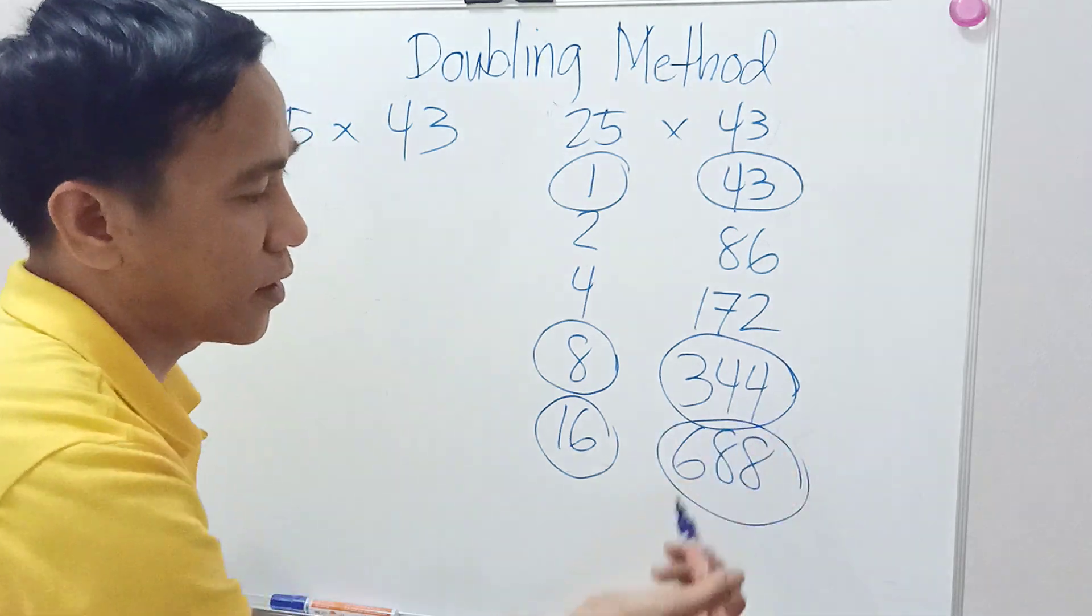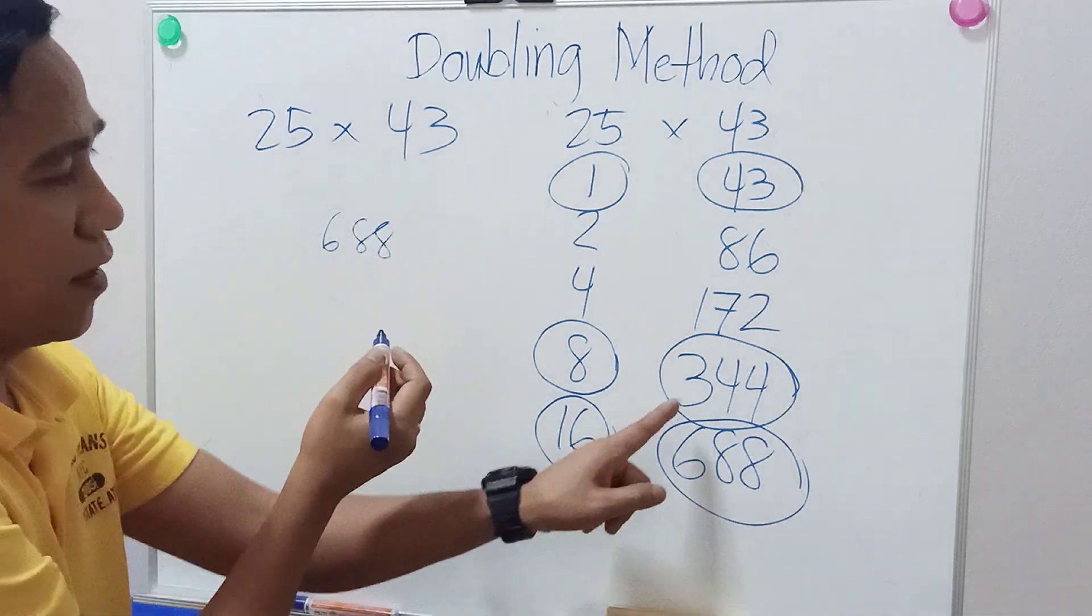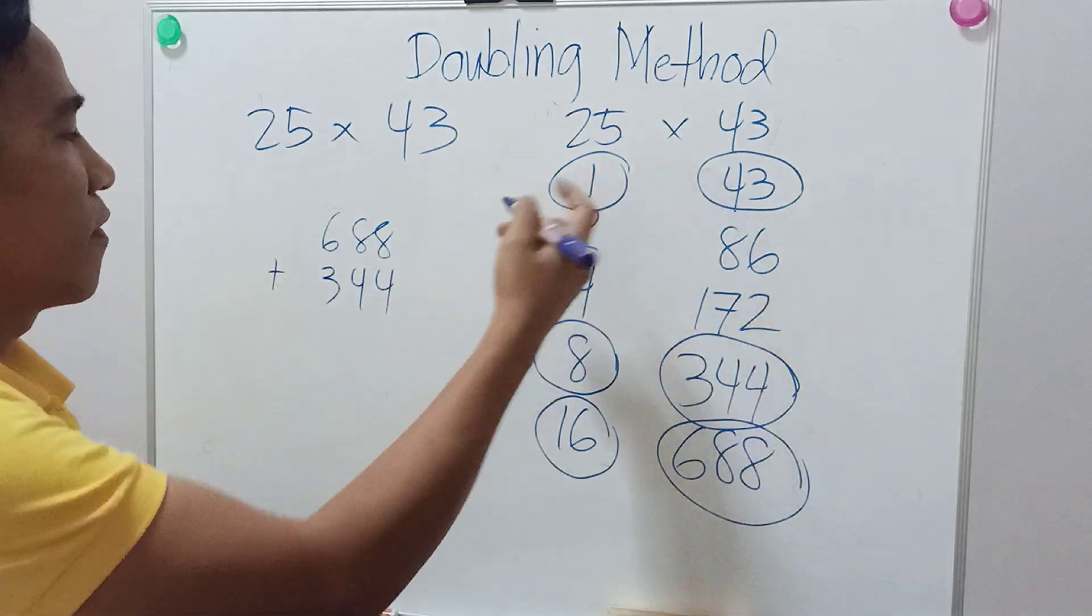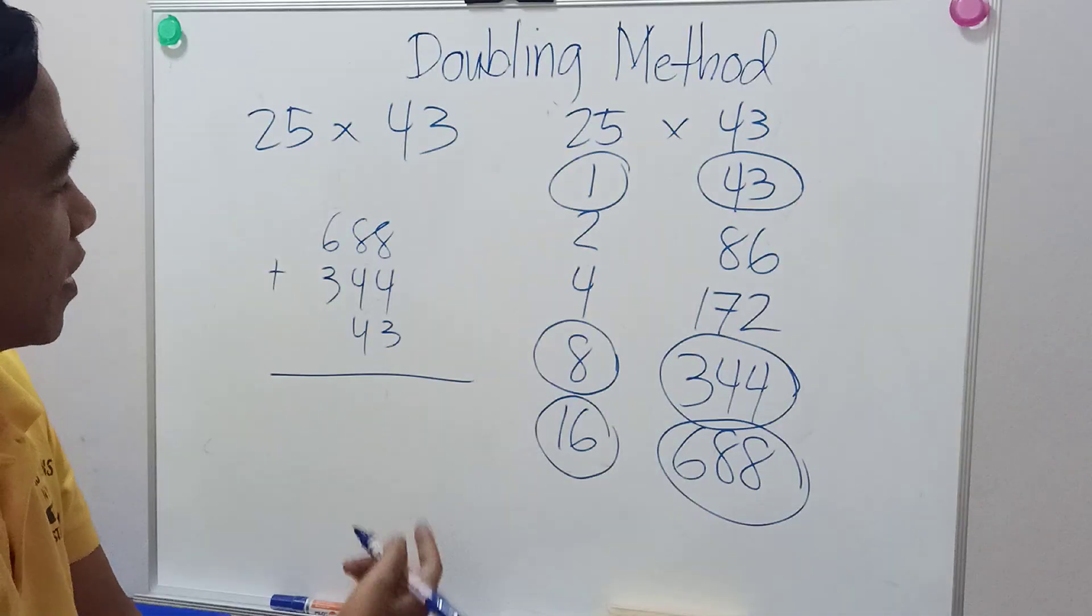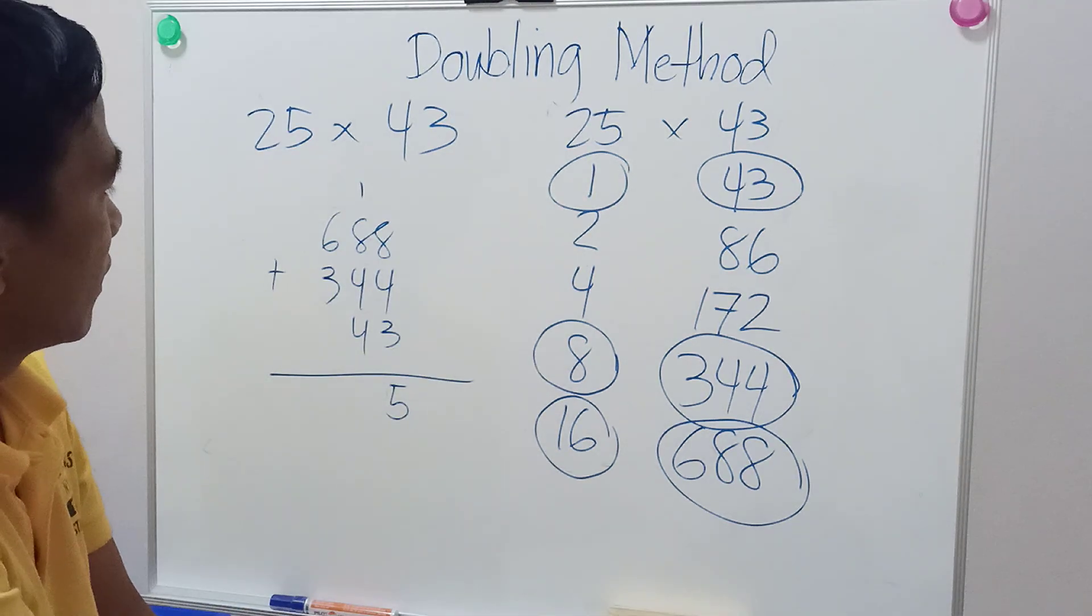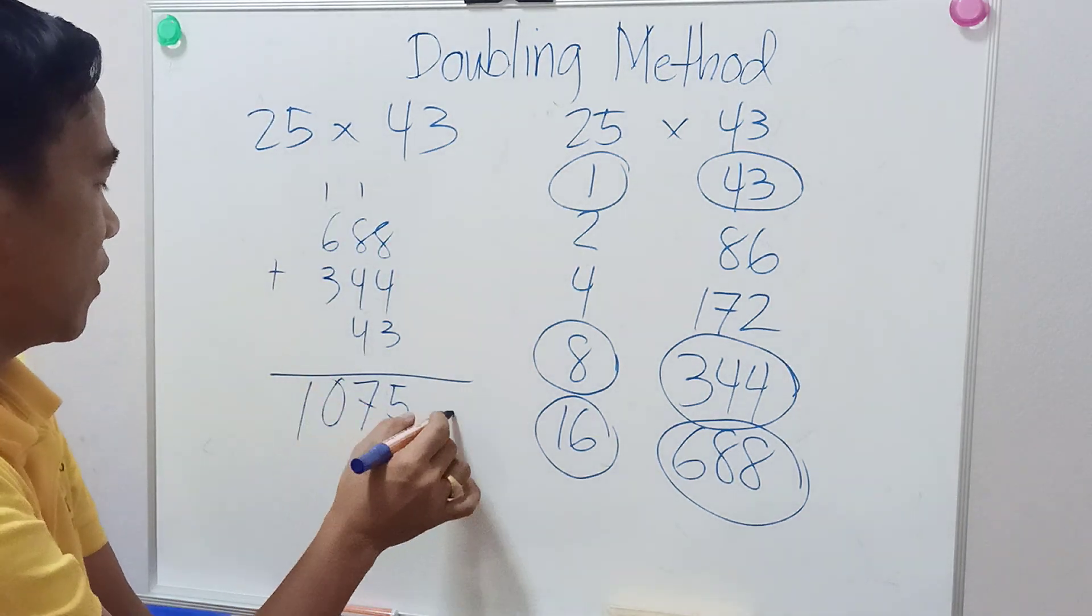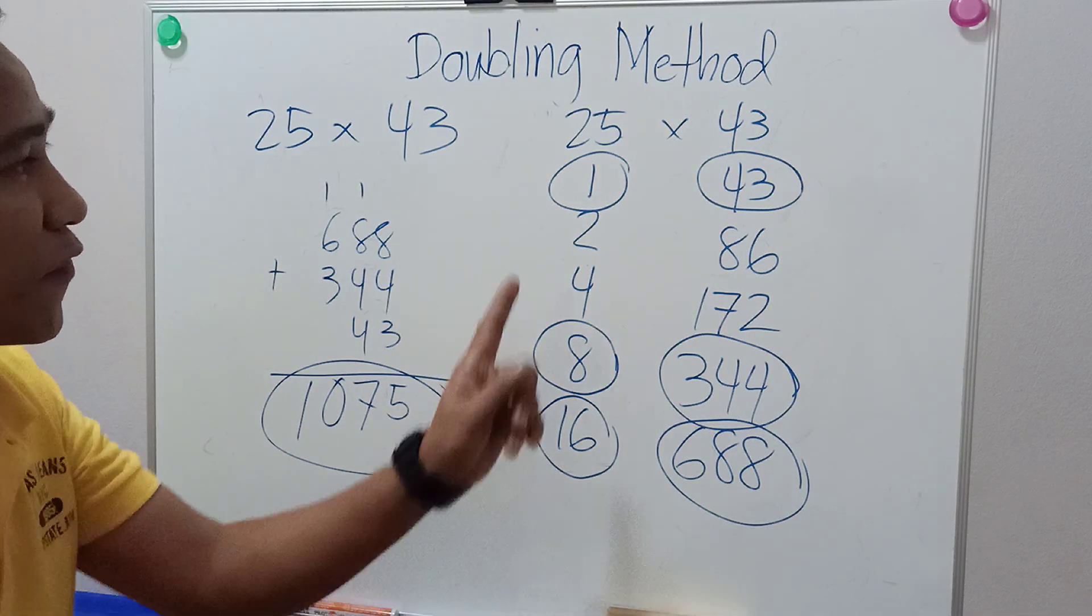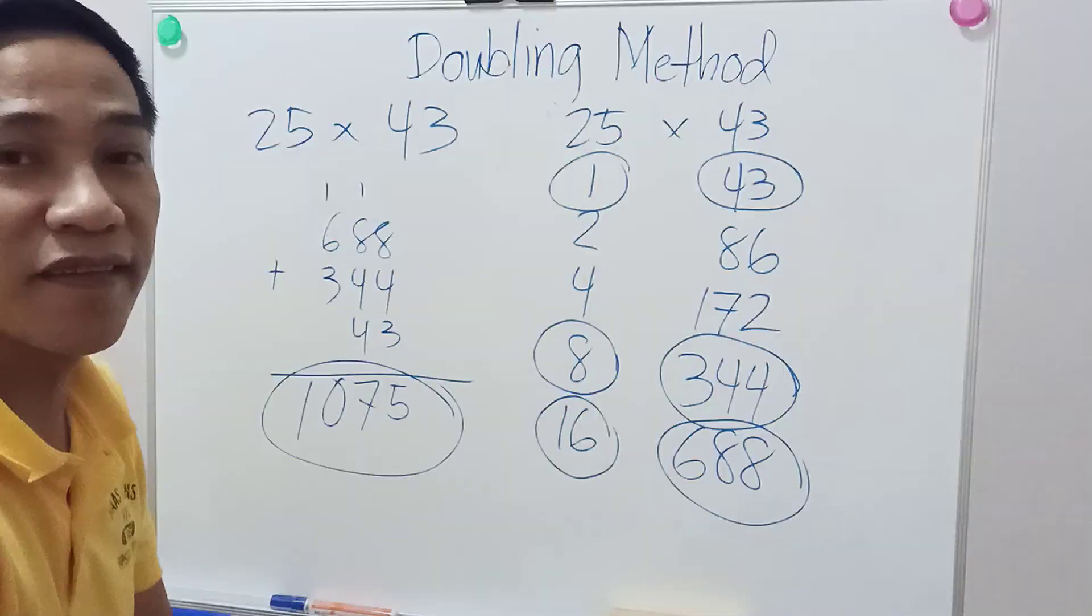So 688 plus 344 plus 43. Adding them up: 8 plus 4 plus 3 is 15, carry over 1, then 1 plus 6 plus 4 is 11, carry 1, then 1 plus 6 plus 3 is 10. So the answer is 1075. Therefore, 25 times 43 is 1075.